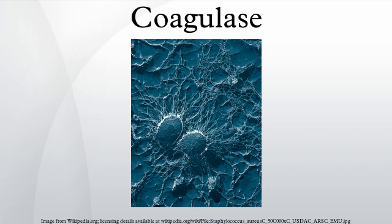A slide coagulase test is run with a negative control to rule out autoagglutination. Two drops of saline are put onto the slide labeled with sample number, test and control. The two saline drops are emulsified with the test organism using a wire loop, straight wire, or wooden stick. A drop of plasma is placed on the inoculated saline drop corresponding to test, and mixed well, then the slide is rocked gently for about 10 seconds.